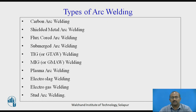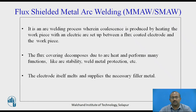There is an exhaustive list of types of arc welding. We will discuss one type: flux shielded metal arc welding, also called manual metal arc welding, with short forms MMAW and SMAW. It is an arc welding process wherein coalescence is produced by heating the work piece with an electric arc set up between a flux-coated electrode and the work piece. The flux covering decomposes due to arc heat and performs functions like arc stability and weld metal protection. The electrode itself melts and supplies the necessary filler material to the weld pool.